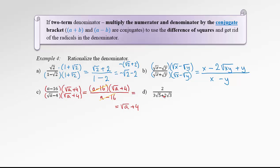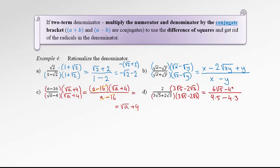Let's go to example D. Again, multiply the top and the bottom by the conjugate bracket: 3 root 5 minus 2 root 3, here and there. Let's start with the denominator: square of 3 root 5 is 9 times 5, minus square of 2 root 3, which is 4 times 3. In the numerator, we can distribute the 2 to each term, giving 6 root 5 minus 4 root 3. So the denominator equals 45 minus 12, which is 33. The final answer is 6 root 5 minus 4 root 3 over 33, and that's all we can do here.